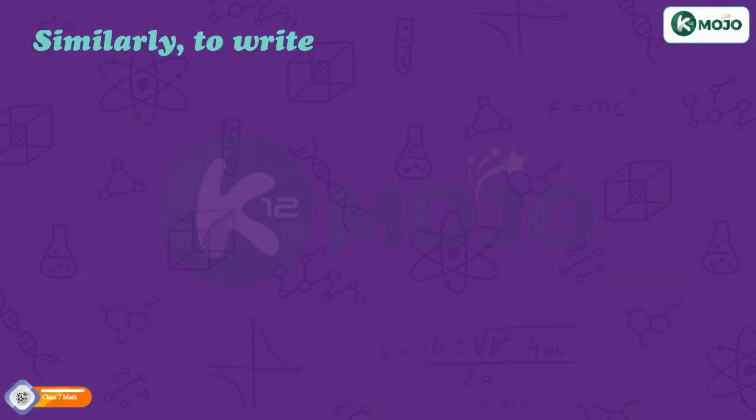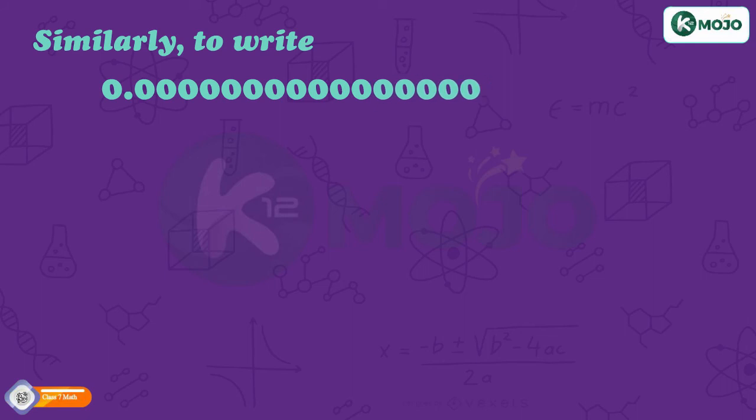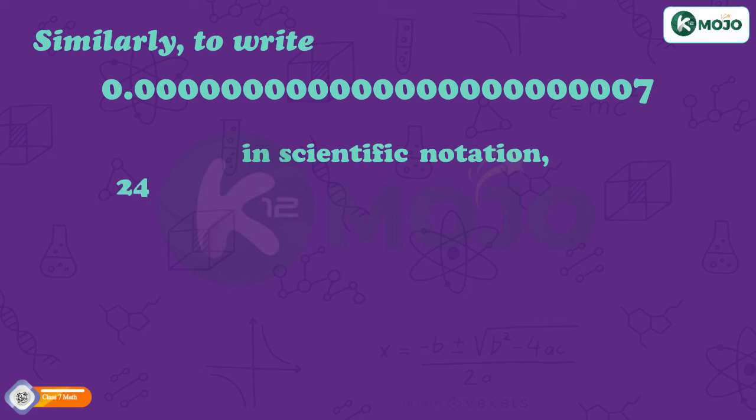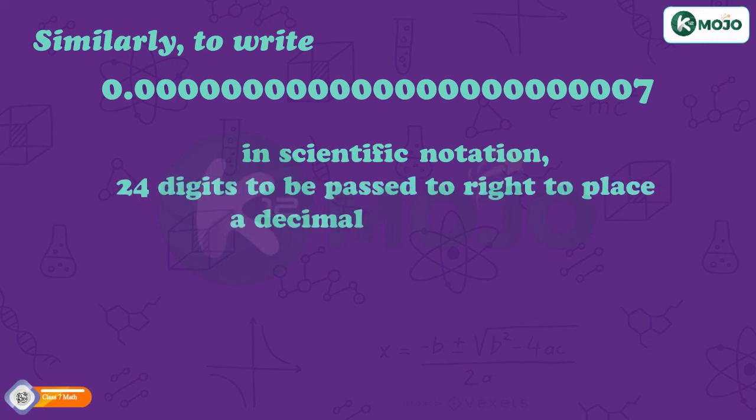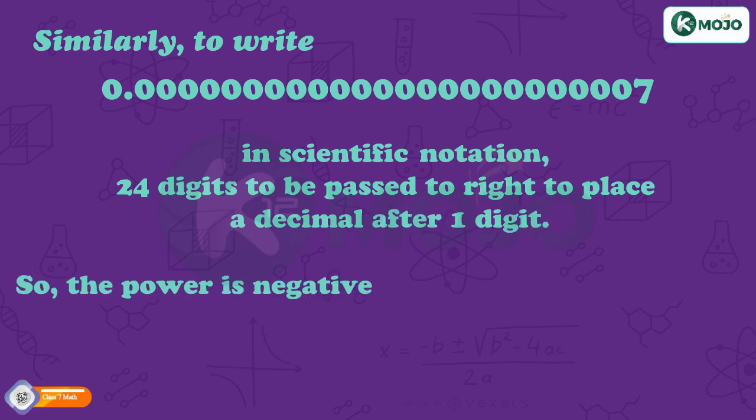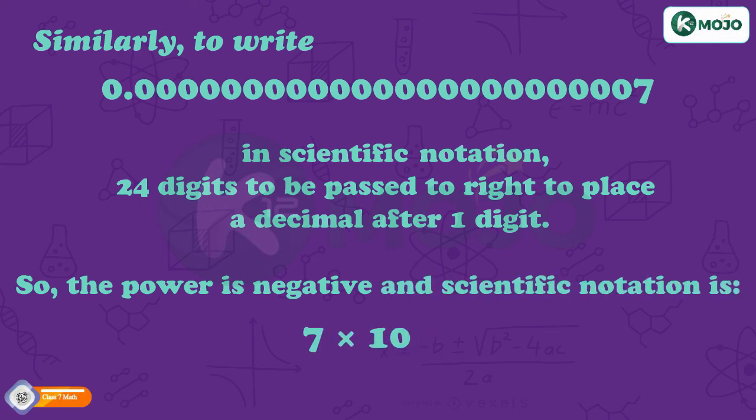Similarly, to write 0.000000000000000000000007 in Scientific Notation, 24 digits to be passed to right to place a decimal after 1 digit. So, the power is negative and Scientific Notation is 7 into 10 raised to the power minus 24.